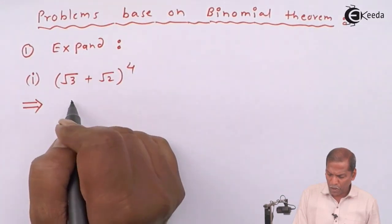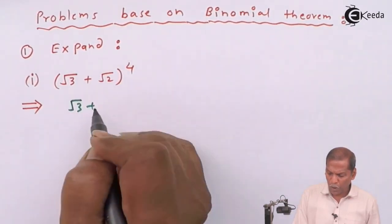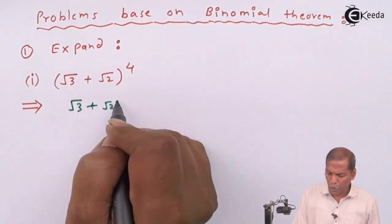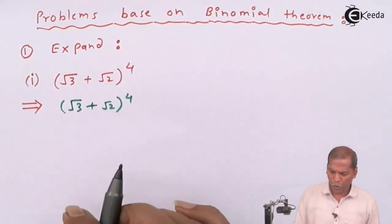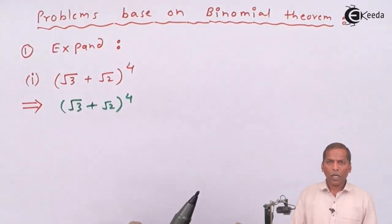First of all we consider root 3 plus root 2 whole bracket raised to 4, then by using binomial theorem.